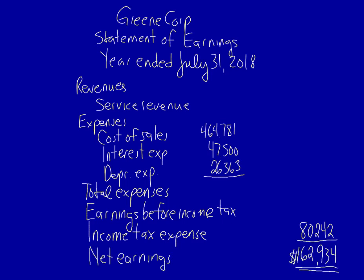Now we can calculate the missing numbers because we have them in the right order. Earnings before income tax equals net earnings plus income tax expense — that gives us $243,176. Total expenses excluding income tax equals all the expenses added together: $538,644. We can now use this information to calculate revenue. Revenue equals earnings before income tax plus all expenses: $243,176 plus $538,644 equals $781,820.